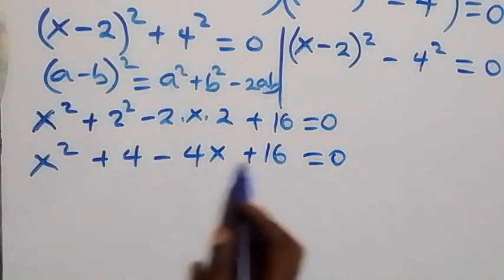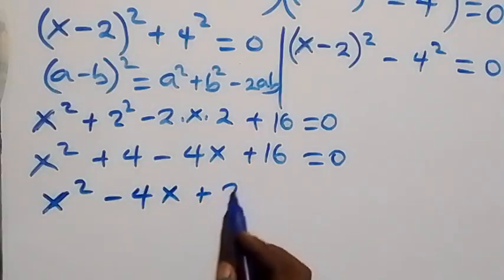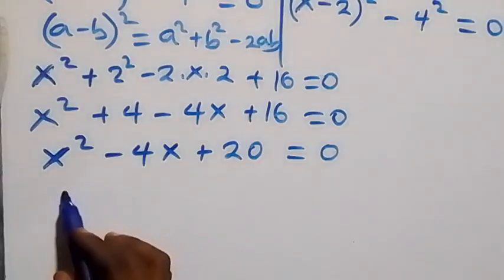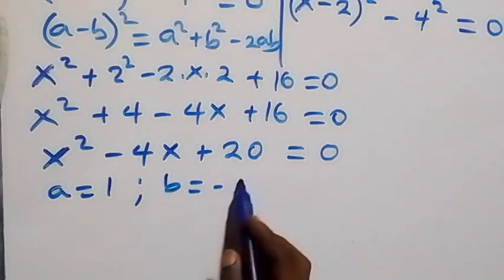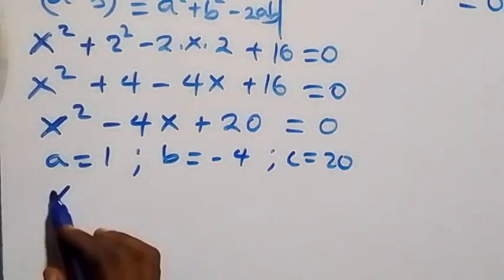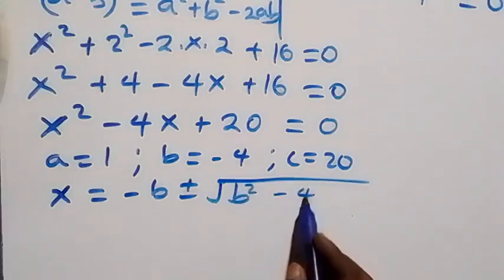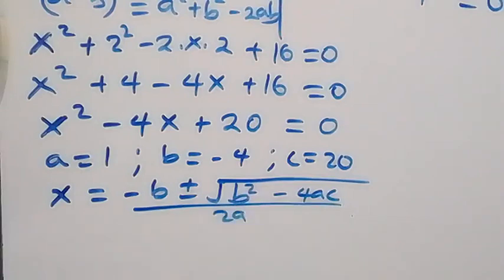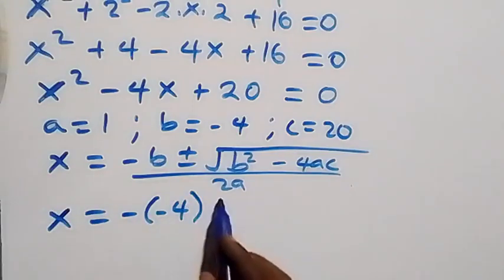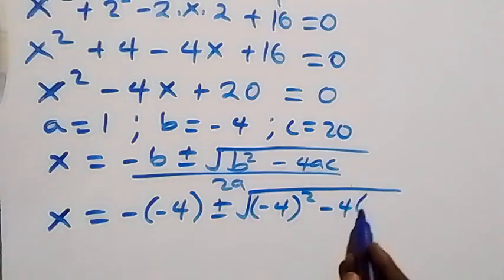When we rearrange, 4 and 16 give us x squared minus 4x plus 20 equals to zero. We have a quadratic equation where a equals 1, b equals minus 4, and c equals 20. From the quadratic formula: x equals minus b plus or minus square root of b squared minus 4ac, all over 2a.